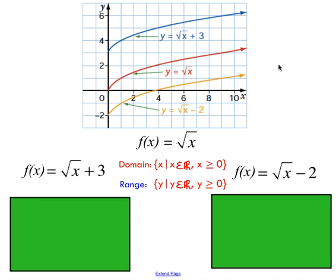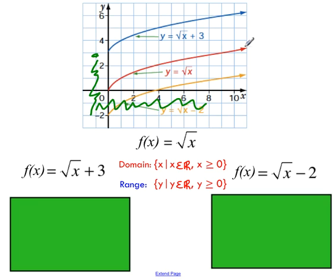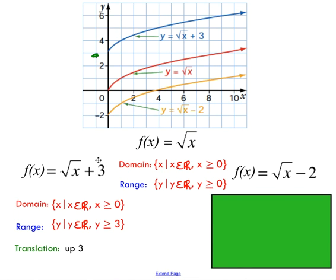That's vertical translation for the square root function. Adding something on the end moves it up; subtracting something at the end moves it down. Adding or subtracting a number at the end of a function produces similar results for any function, not just the square root function — we've seen that with parabolas. We've already discussed the domain of the square root function: you can't substitute negative values in, and you can't get negative values out.